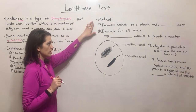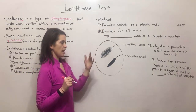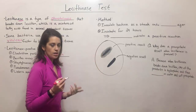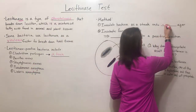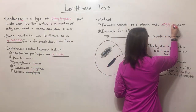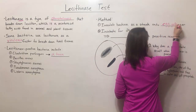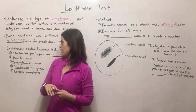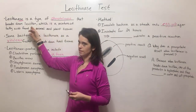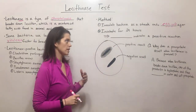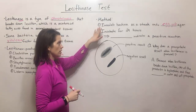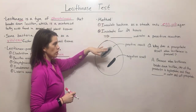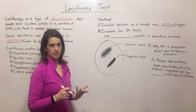The way the test works is you inoculate bacteria as a streak — like the black streaks shown here — onto egg yolk agar. This is agar that contains egg yolk, and egg yolk has a lot of lecithin, which is why it's used in this test. You inoculate the agar with the bacteria, incubate for 24 hours, and then it's time to analyze results.